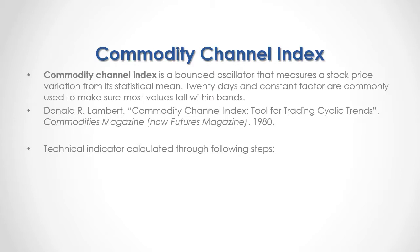The technical indicator is calculated through the following steps. Step A: Typical Price Calculation. The current period typical price is equal to the current period High plus Low plus Close prices, divided by 3.